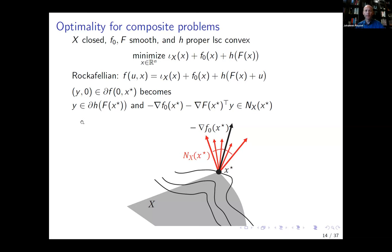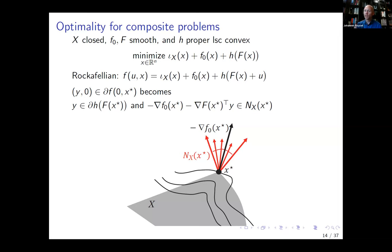A question: are there any restrictions on what the Rockefellian can be? The only restriction is that if you put u equal to zero, you should get back to the actual problem. With that tiny restriction there are so many possibilities. The question is: can you come up with one that is useful, computationally attractive, and has the properties you like? It's essentially an embedding — it embeds a parametrization of your problem, and that parametrization you're free to choose.